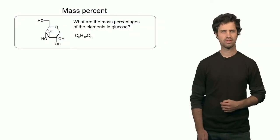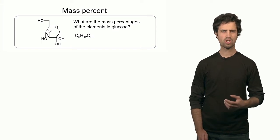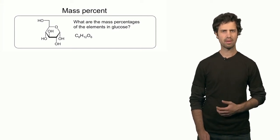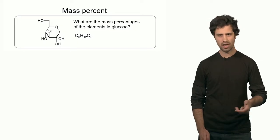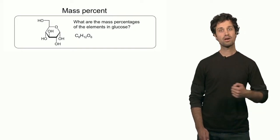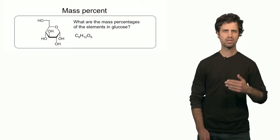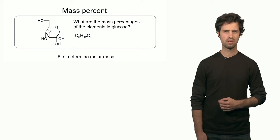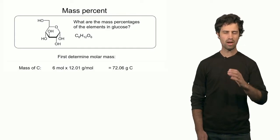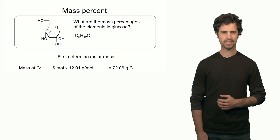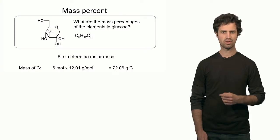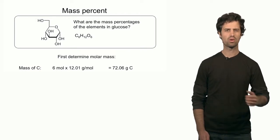The best way to learn about this is to do a couple of examples. Let's start with the glucose molecule. Glucose is an organic molecule containing three elements: carbon, hydrogen, and oxygen. The first step is to calculate the molar mass of glucose. One mole of glucose contains six moles of carbon, so six times 12 — the molar mass of carbon — gives a total of approximately 72 grams. That is the contribution of carbon to one mole of the compound.